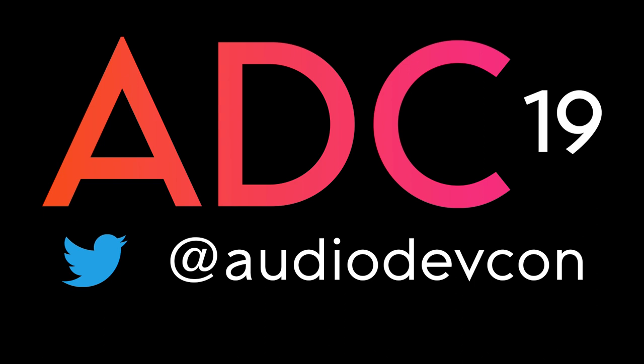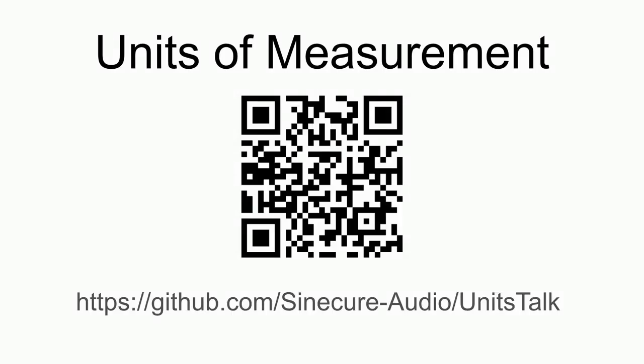I'm giving a brief talk on how to use units in your APIs, mainly for DSP processors, to enforce type correctness and reduce boilerplate code. I have some examples if you want to download them — they're at the URL the QR code points to, so I'll leave the slide up for a second.